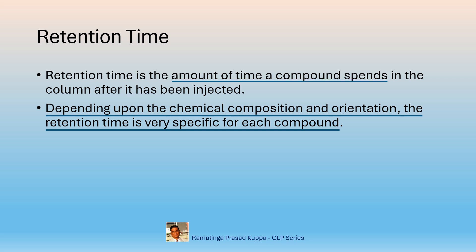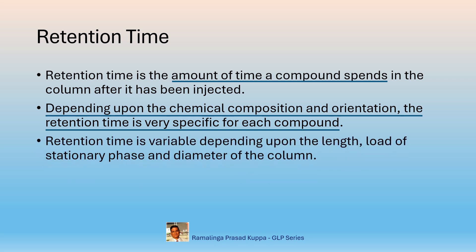In addition to the chemical composition, the spatially oriented cis and trans isomers also will have different retention times. Retention time is variable depending upon the length and load of the stationary phase and diameter of the column. This aspect is easy to understand. If the column length is increased, the retention time of the compound will be longer.